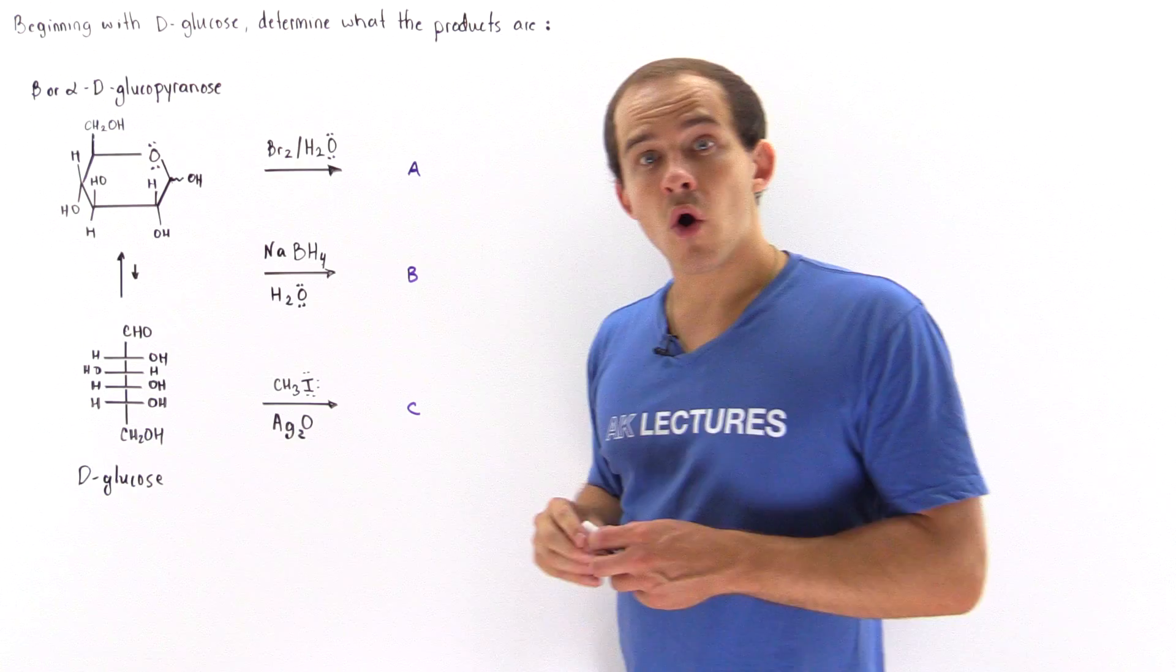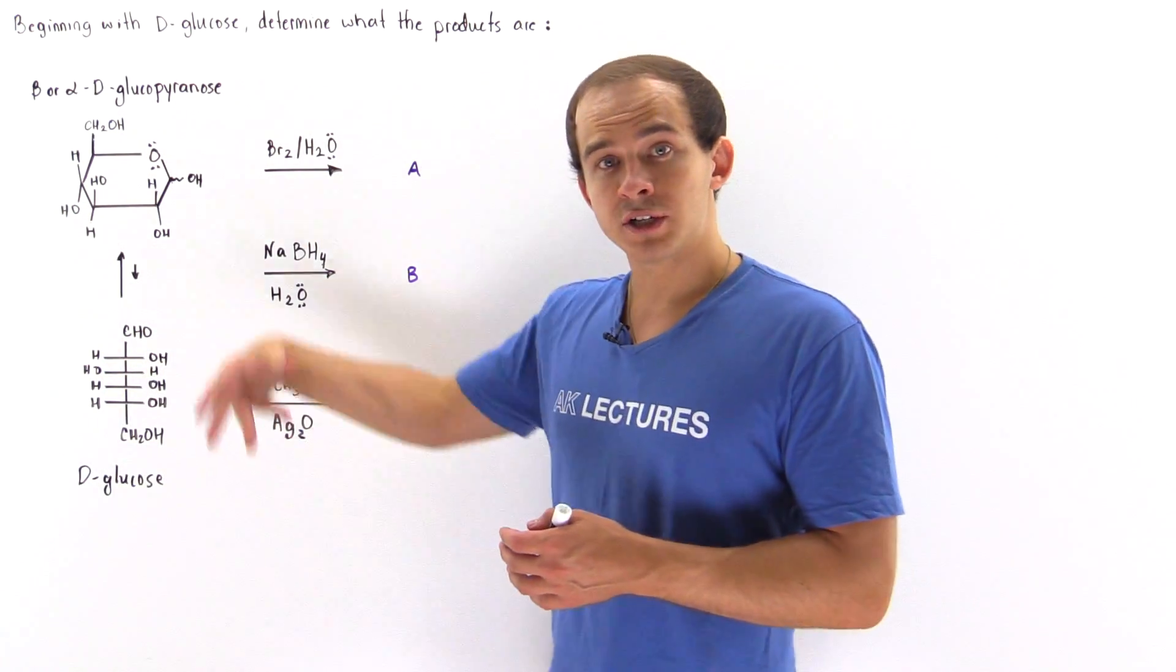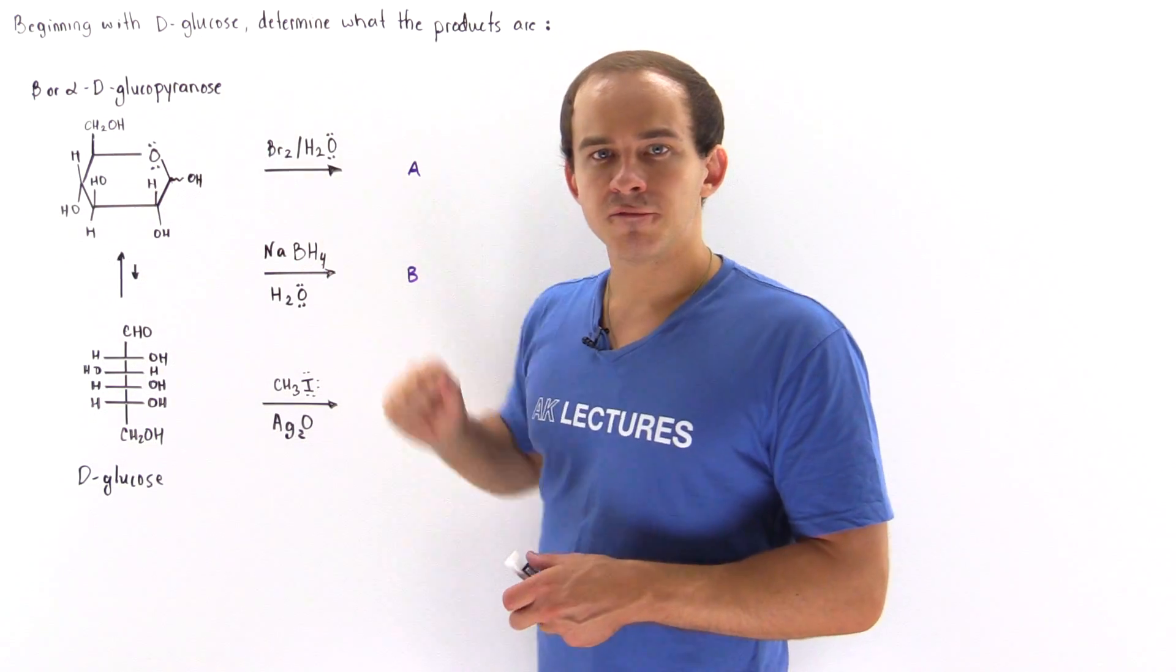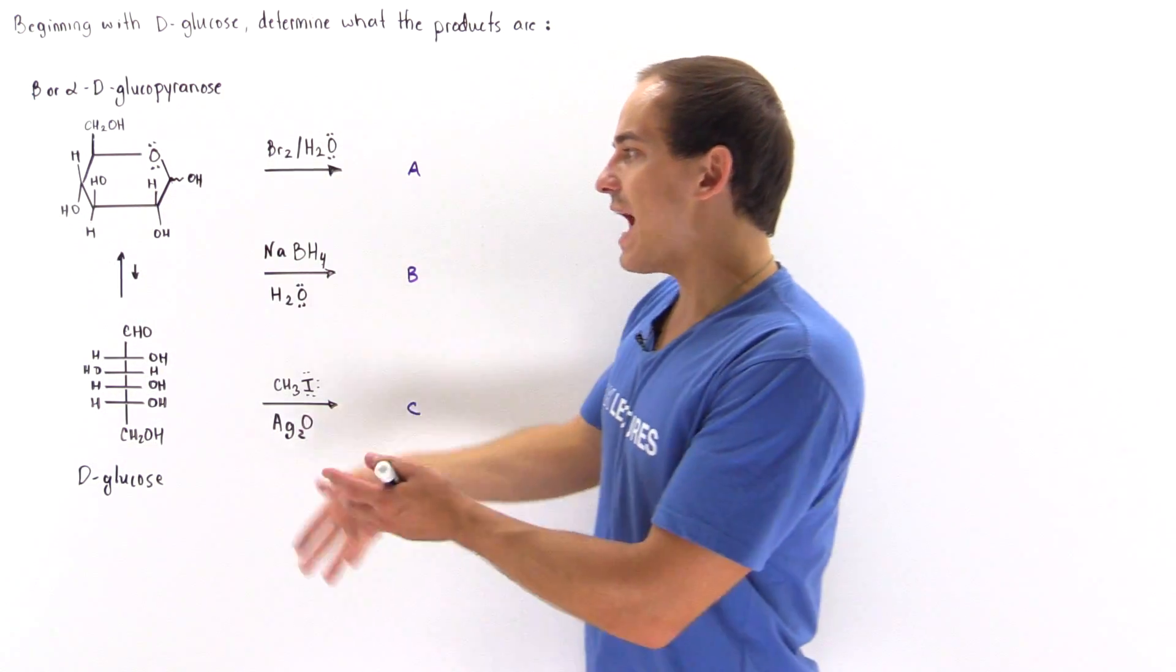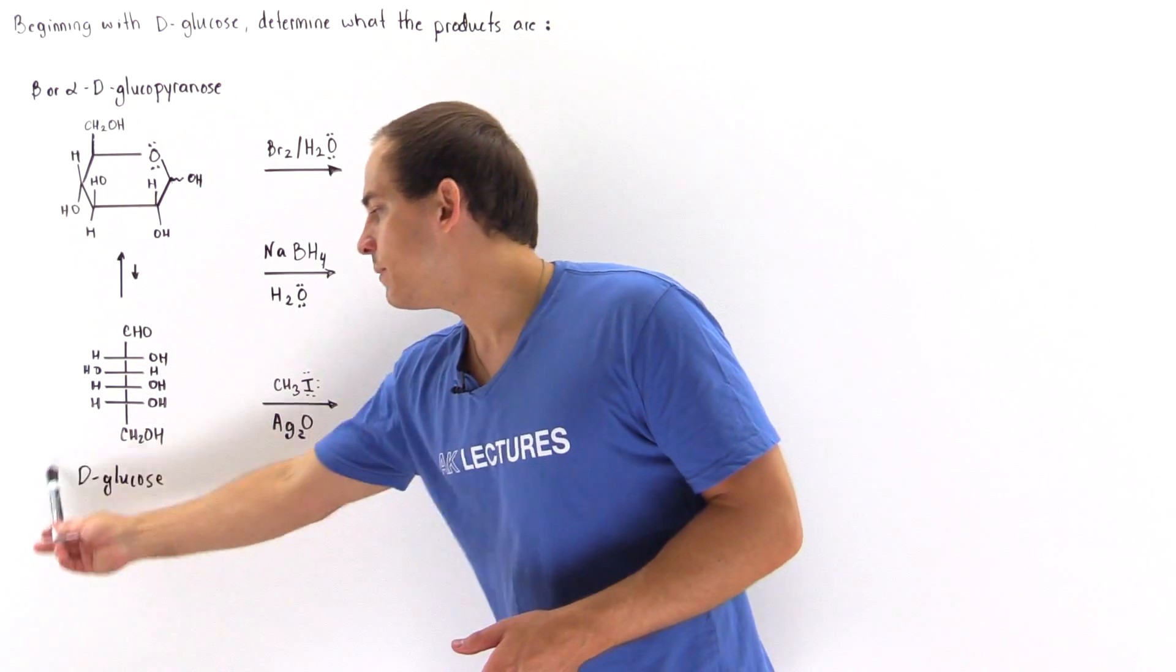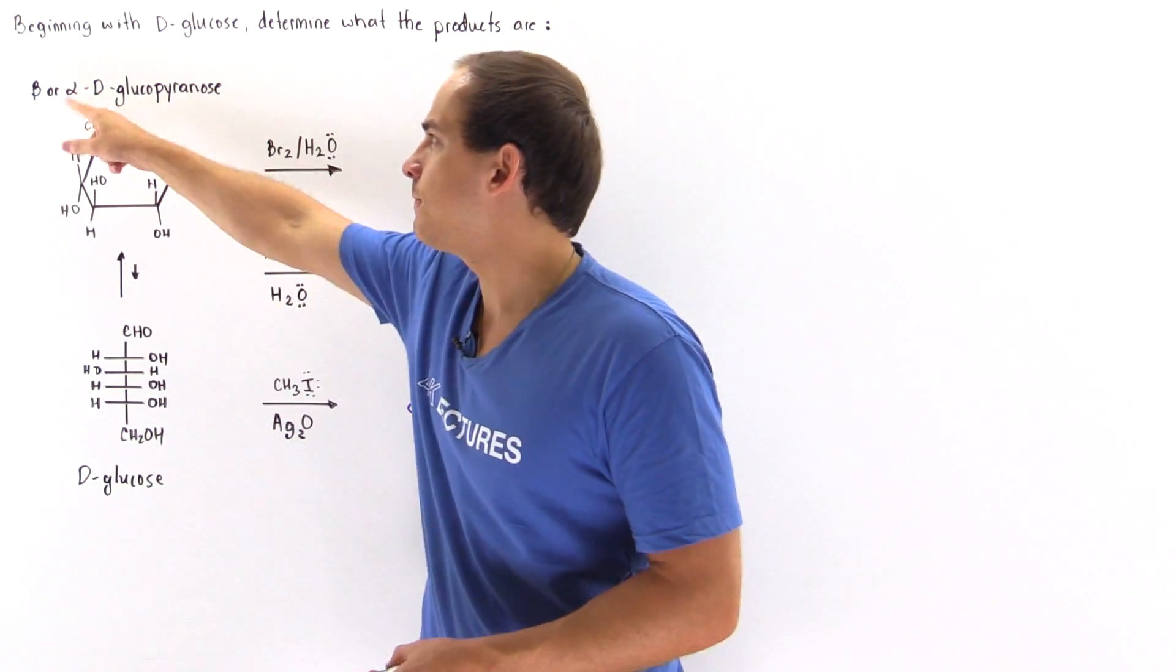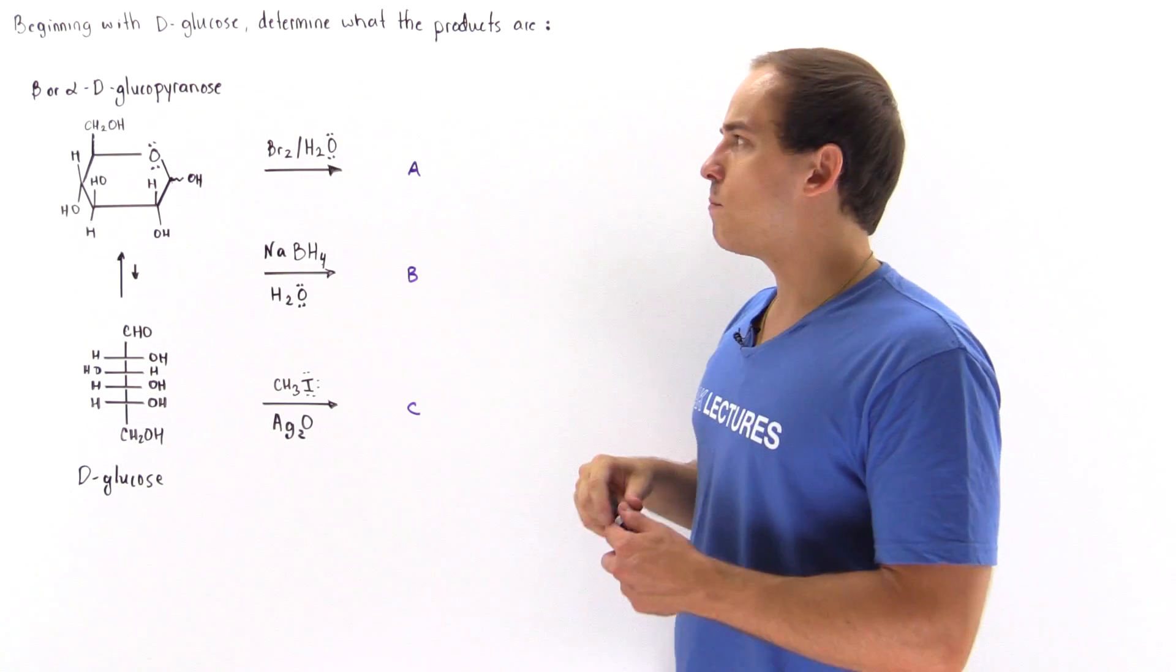First recall that whenever we have an open D-glucose molecule, it will interconvert into the cyclic version. Eventually we have a dynamic equilibrium that exists between the open version of D-glucose and the closed version, either the alpha or beta D-glucopyranose.